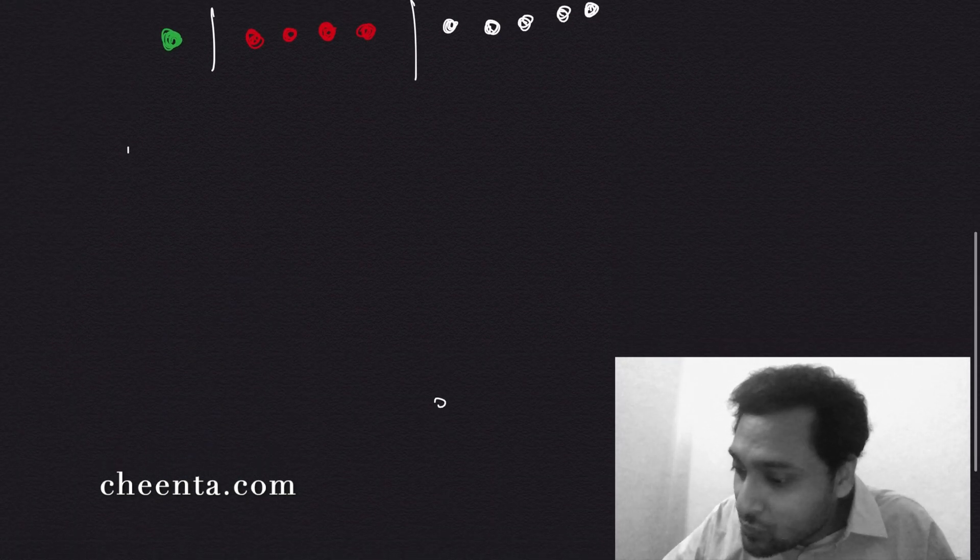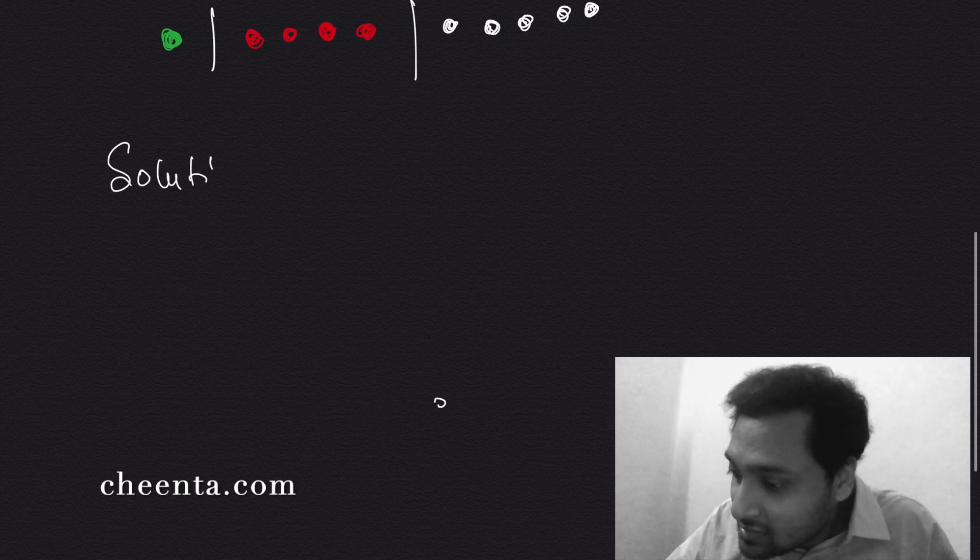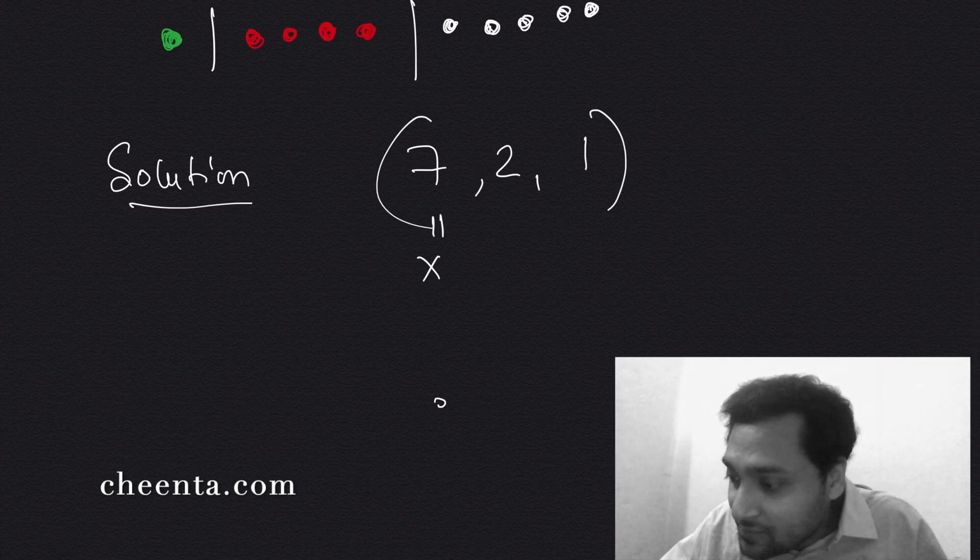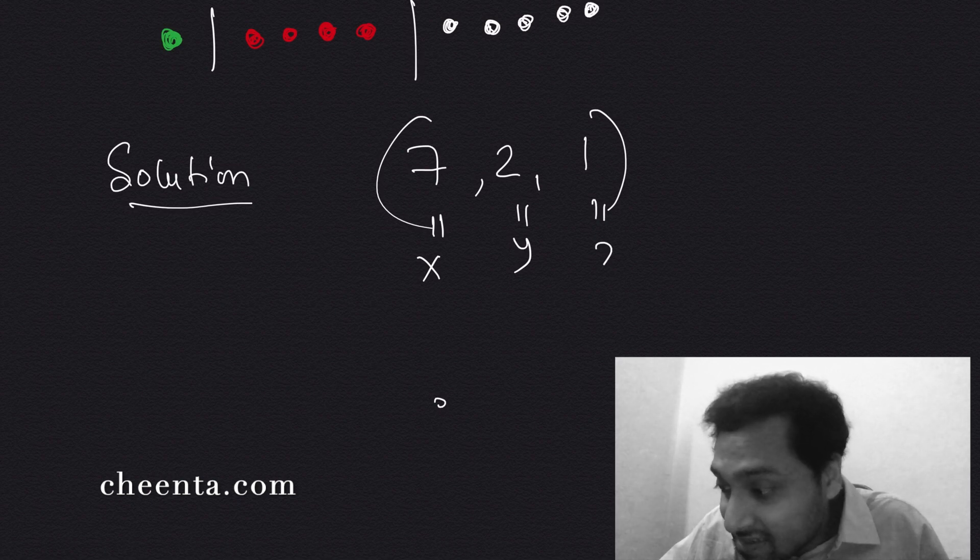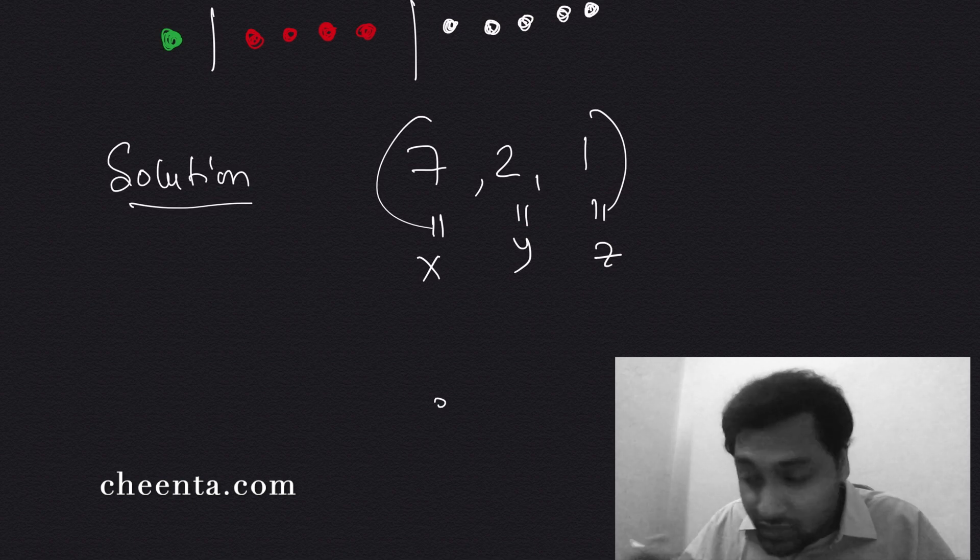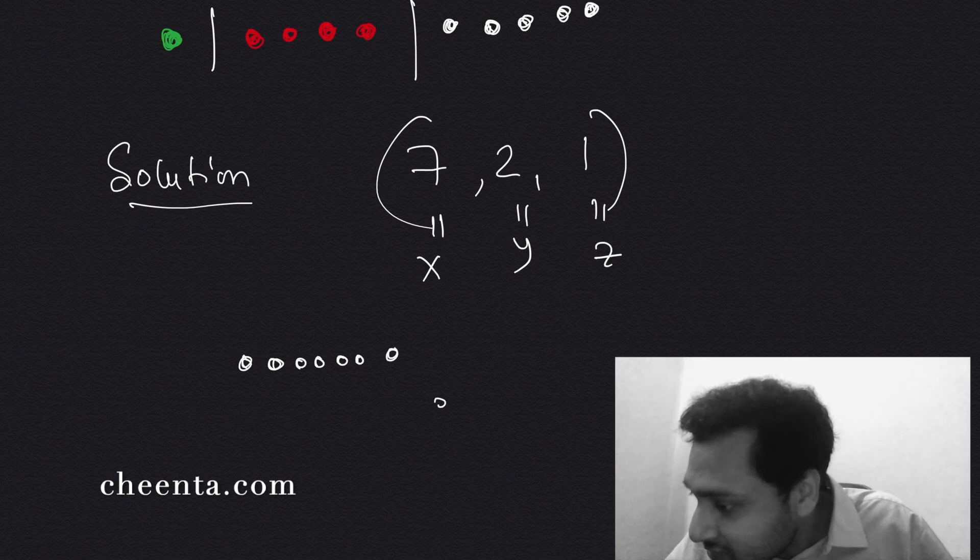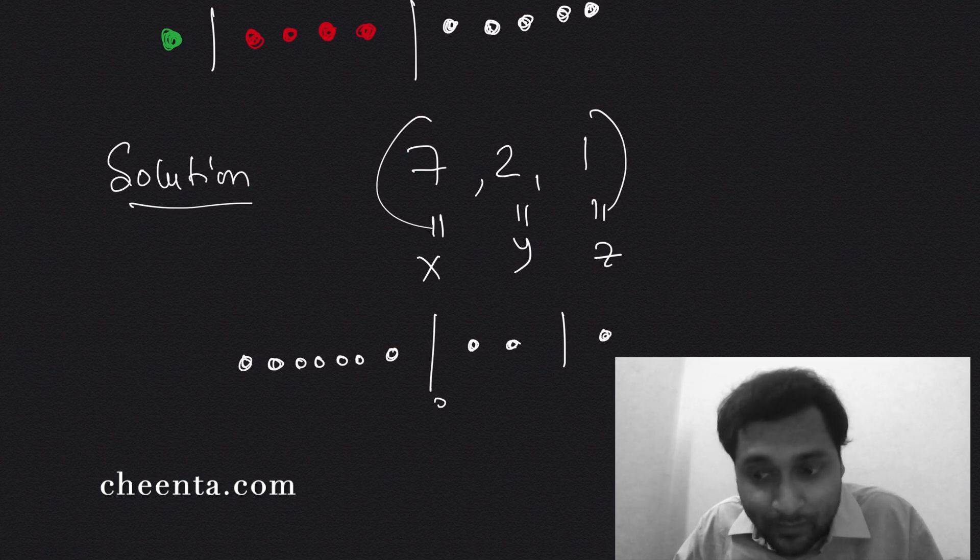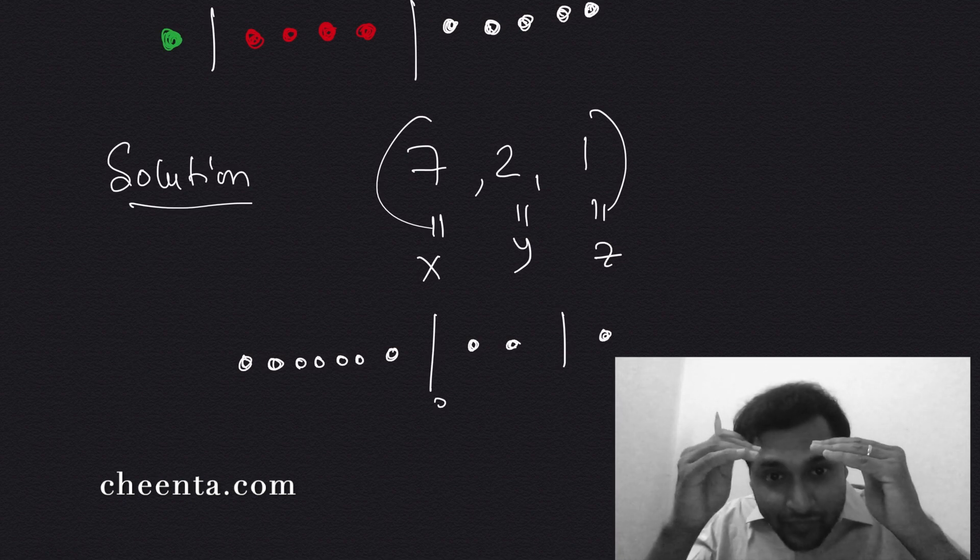For example, if I give you a solution 7, 2, 1, let's say this is a solution: x equals 7, y equals 2, z equals 1. You can immediately create a color code corresponding to this particular solution. So you take seven balls, and then you draw a bar, then you take two balls, then you draw a bar, then you draw one ball.